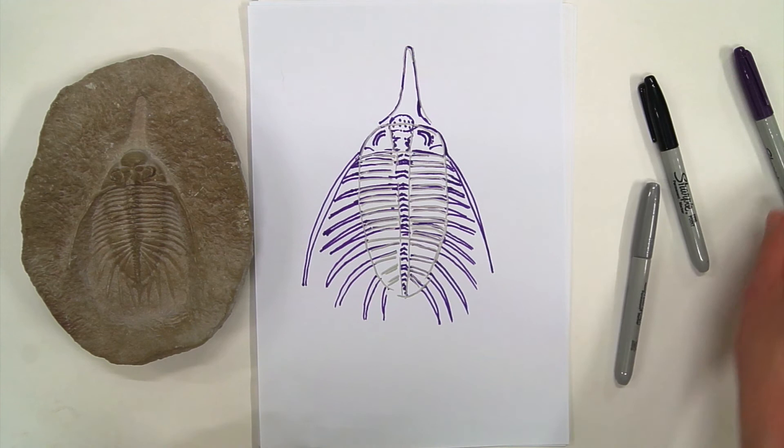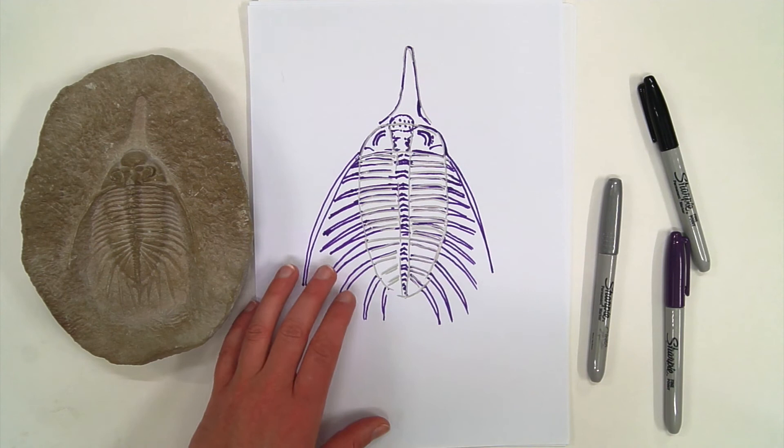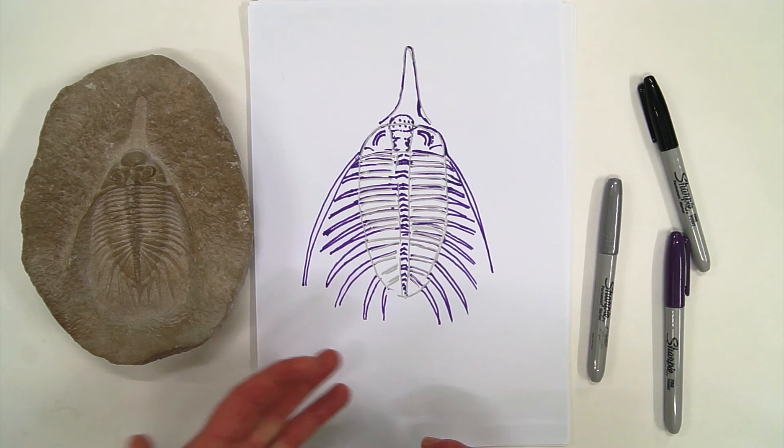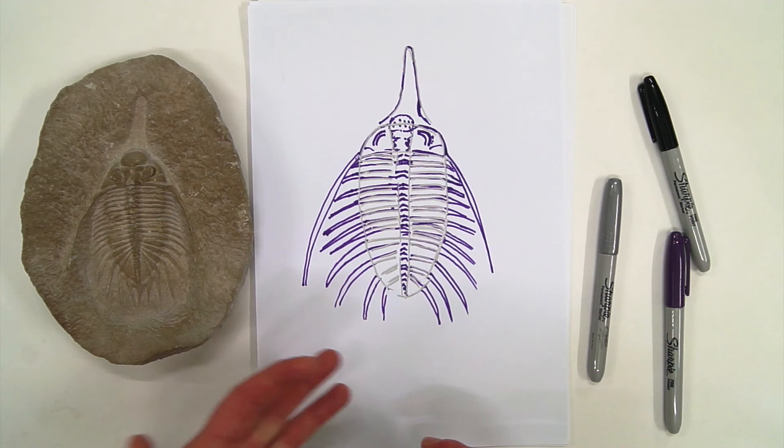So now we have our basic drawing of our trilobite. Because I was using the silver pen as a base, the purple didn't really go over the top of it. Once again, I really stress that you use pencil, light at first, and then slightly darker to go over those lines to really give that sense of what it is.